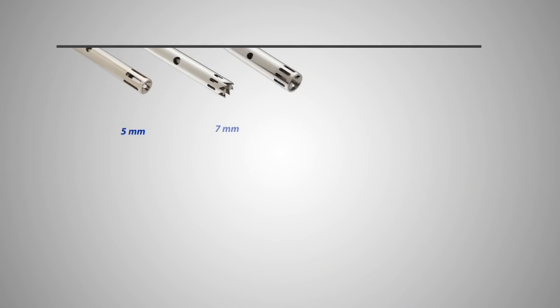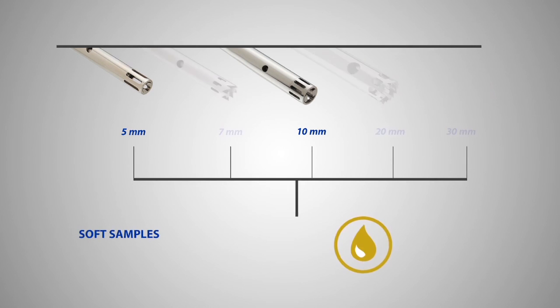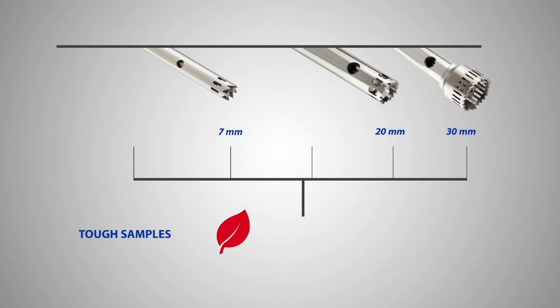The Omni GLH 850 is compatible with the widest range of generator probes from 5 mm to 30 mm in diameter. It is able to create fine emulsions by using the flat bottom generator probes or process tougher samples by using the sawtooth generator probes.